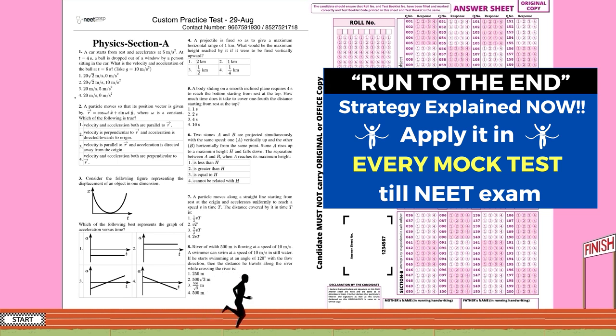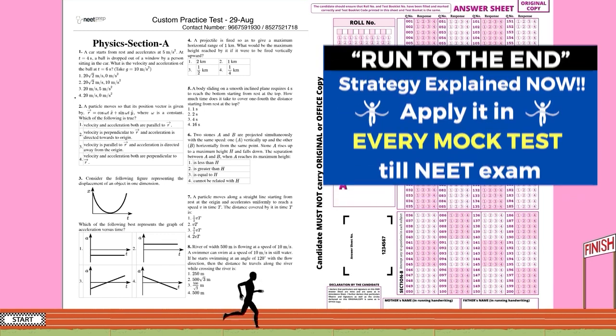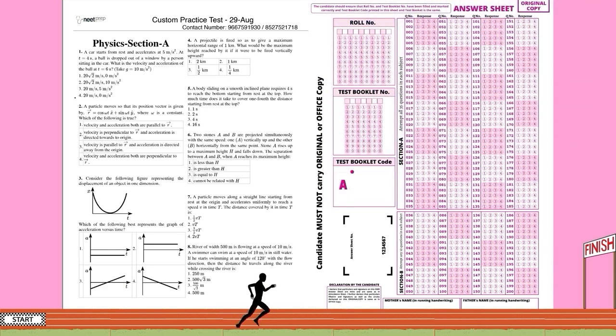Those students who followed this run-to-the-end strategy did not struggle with this problem because they kept marking circles in biology questions. And then physics and chemistry was easy. They were able to finish it quickly and come back to attempt all the biology questions.